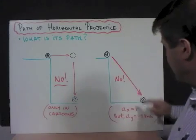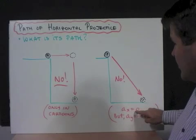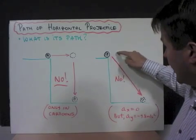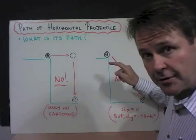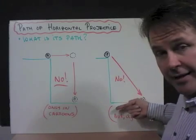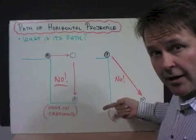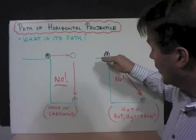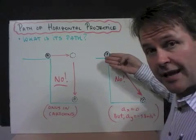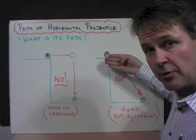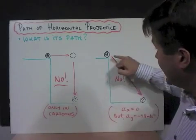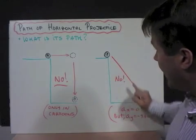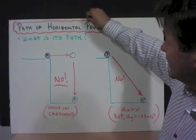That doesn't happen because, remember, Ax is equal to zero, so the ball will travel at a constant speed horizontally, but it will accelerate in a downward direction. So those two parts of the motion occur at the same time. What happens in the x direction occurs at the same time as the object moves in the y direction, and that causes a curved path like this.